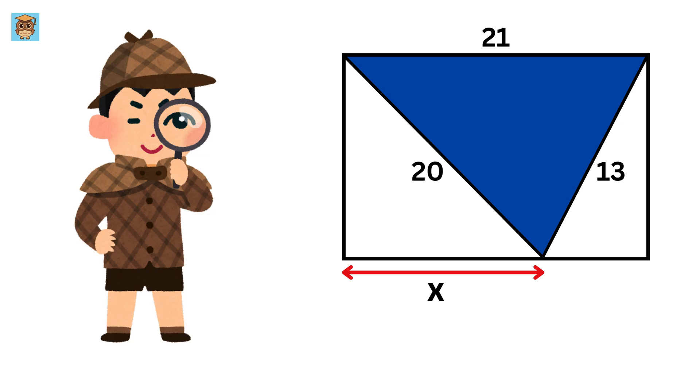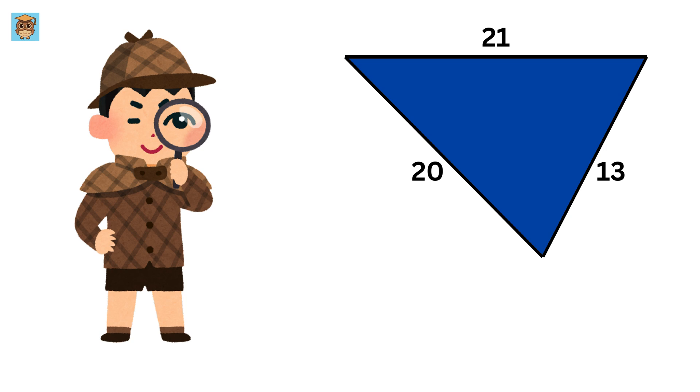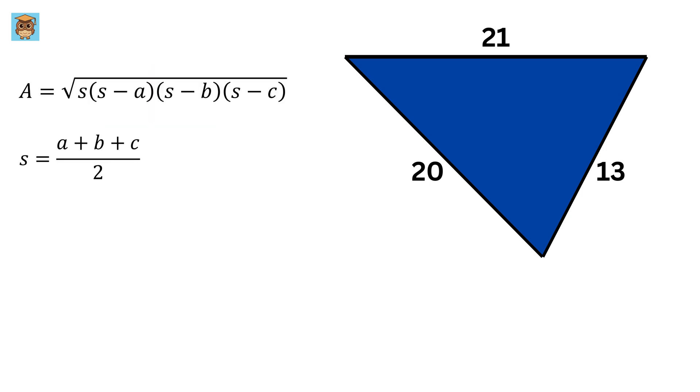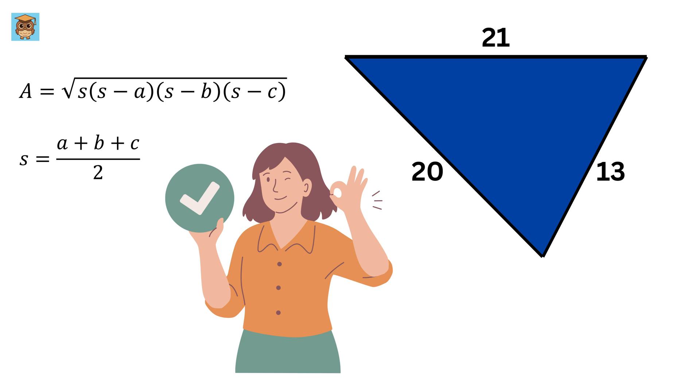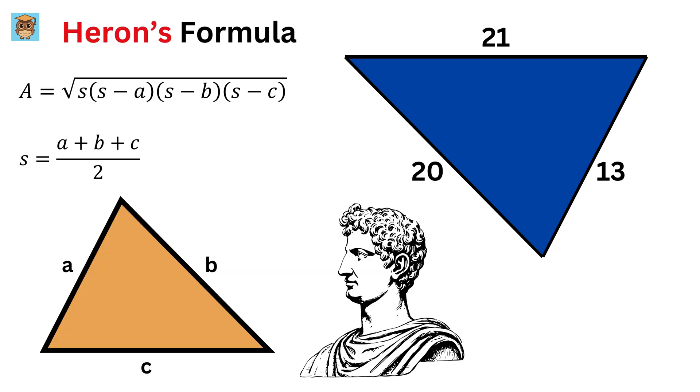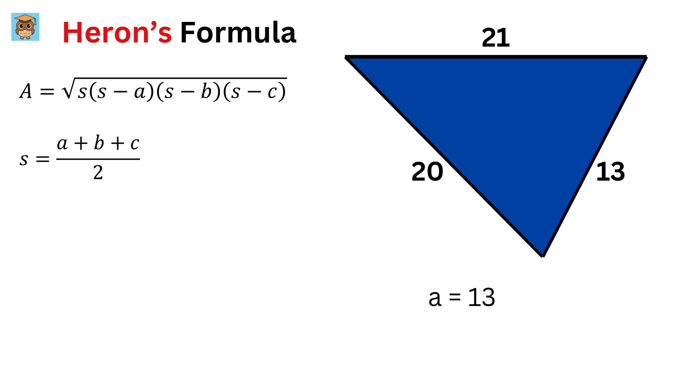Okay, as a first step, as soon as I see a triangle whose three sides are given, I immediately think of this well-known formula. Can you guess whose formula is this? Yes, you are right. It is none other than Heron's formula to find the area of a triangle whose three sides we know. Let a equals 13, b equals 20, and c equals 21.